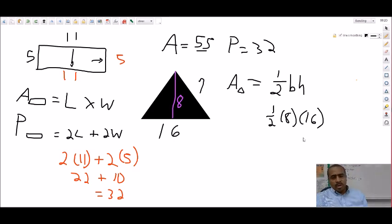Get my calculator out here. So one half times eight times 16 equals 64. So the area of that triangle is going to be 64.